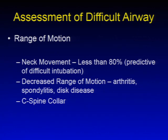Other ways to assess the difficult airway include range of motion. If neck movement is less than 80%, this may be predictive of a difficult intubation. Patients may have decreased range of motion secondary to arthritis, spondylitis, or disc disease, making it more difficult to extend the neck — or if they're in a C-spine collar.